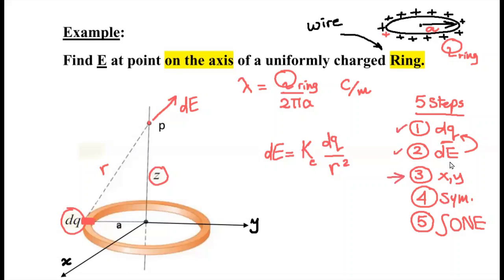So let's go ahead and resolve and find the components of the electric field. I'm going to assume this angle is zeta. I'm going to make two components of the electric field: the vertical one, dE cosine zeta, and the horizontal component, dE sine zeta.